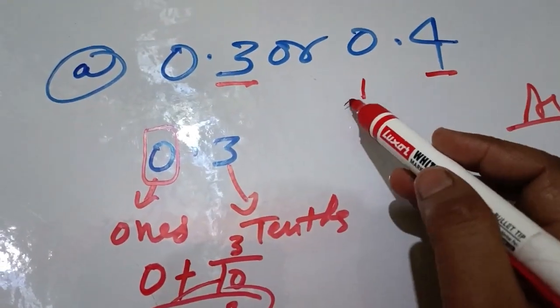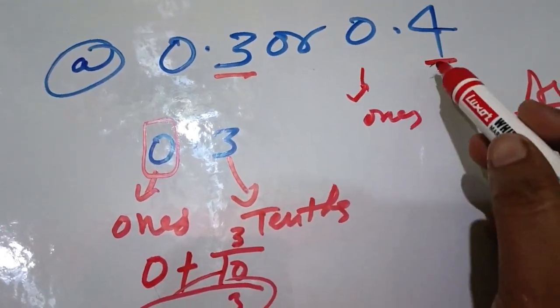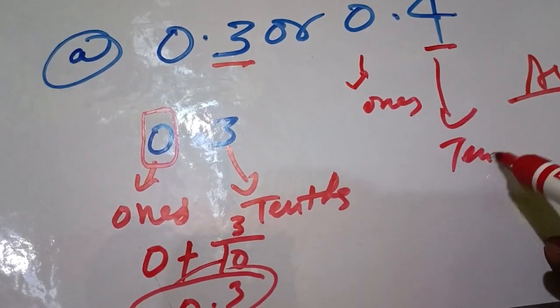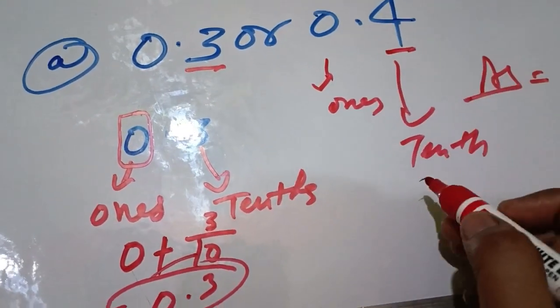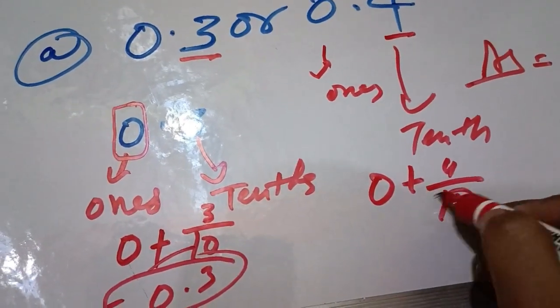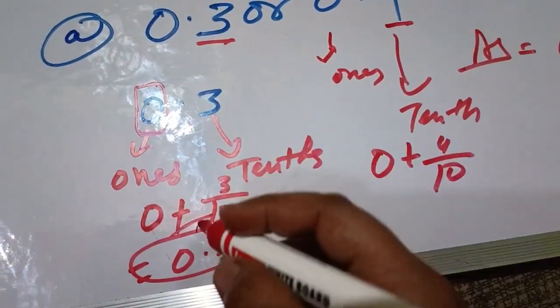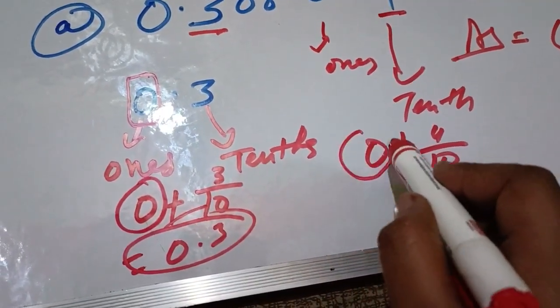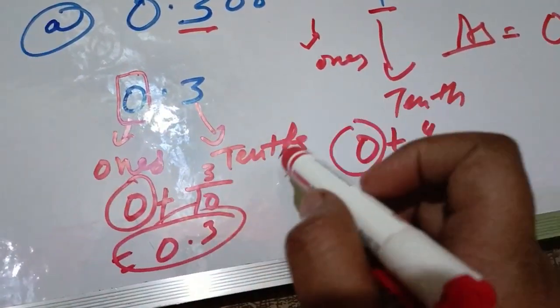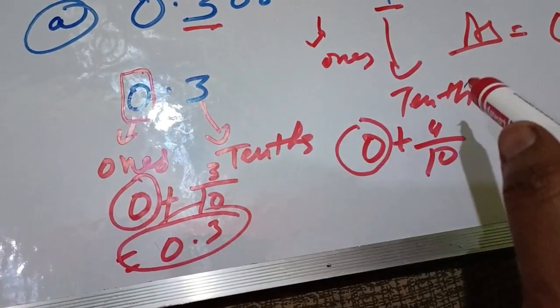Here we will have the same idea. This is ones and this is your tenths. Ones place zero, tenths place four. So this is 0 plus 4 by 10. We can write this. Now, this is 0 in the ones place. So if we compare 3 by 10 and 4 by 10...